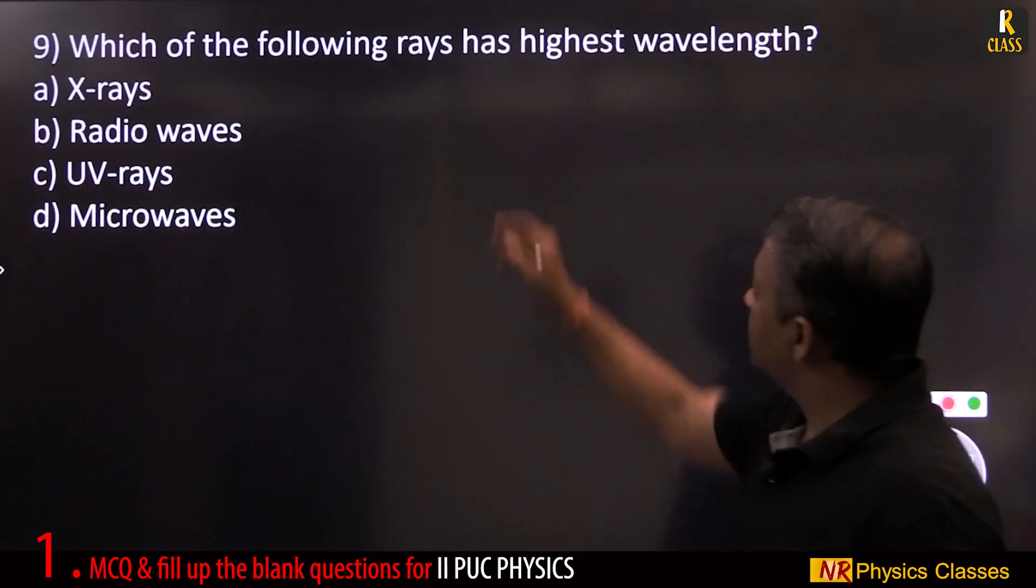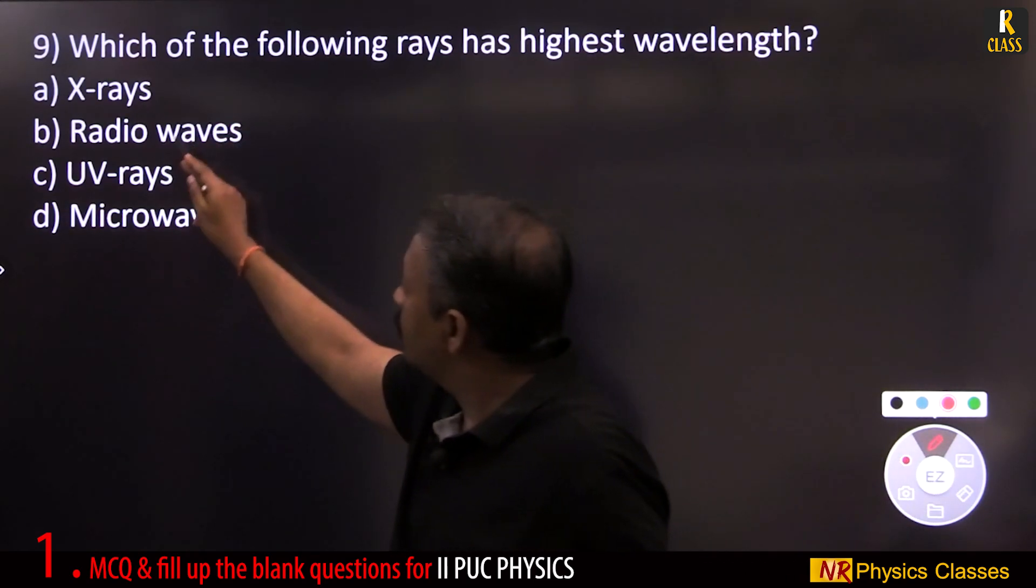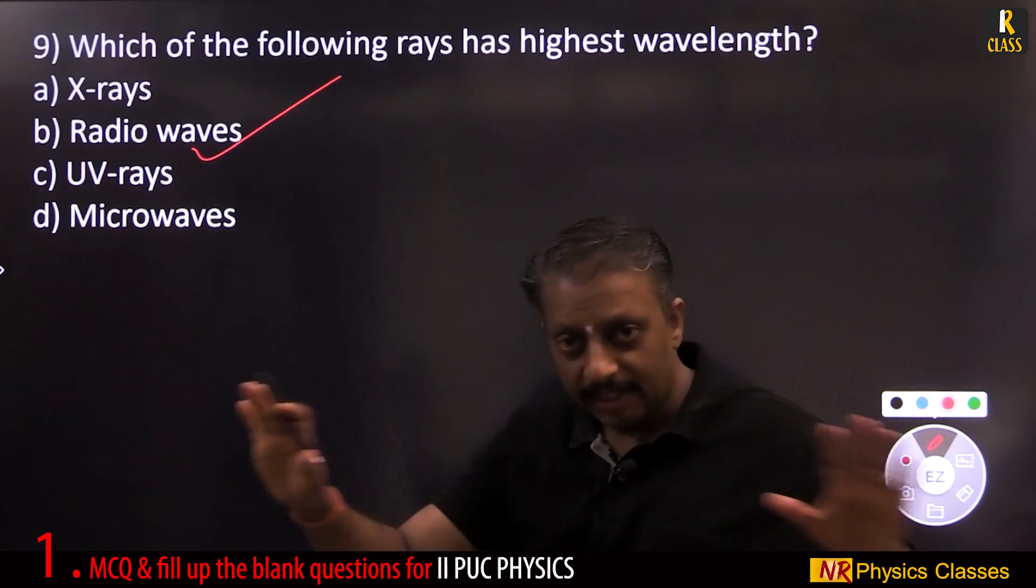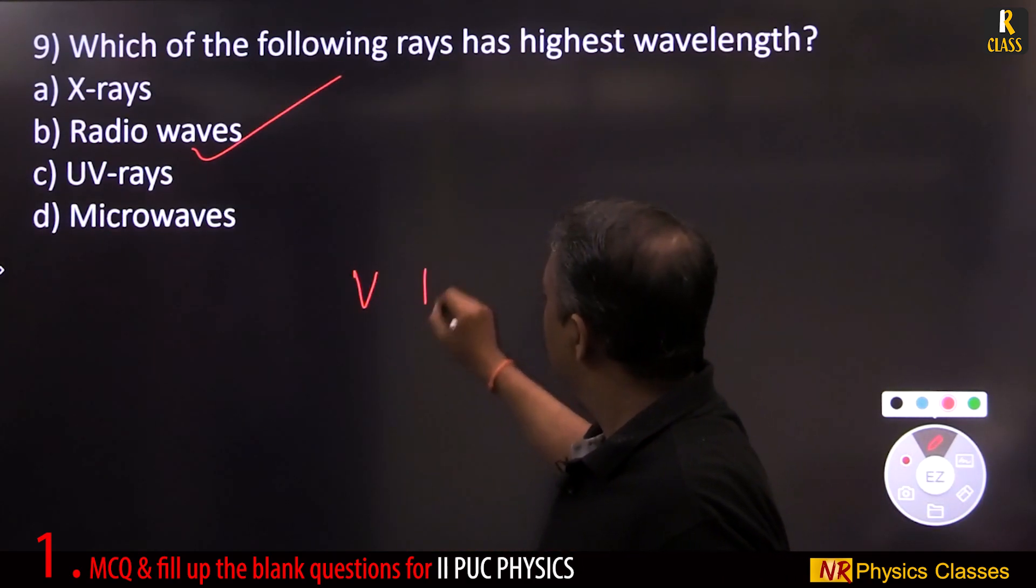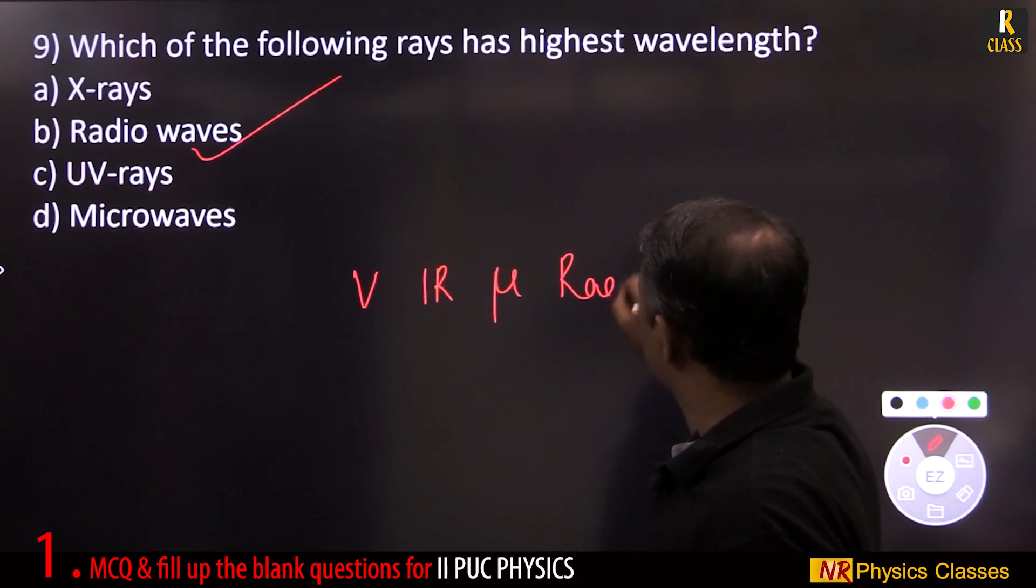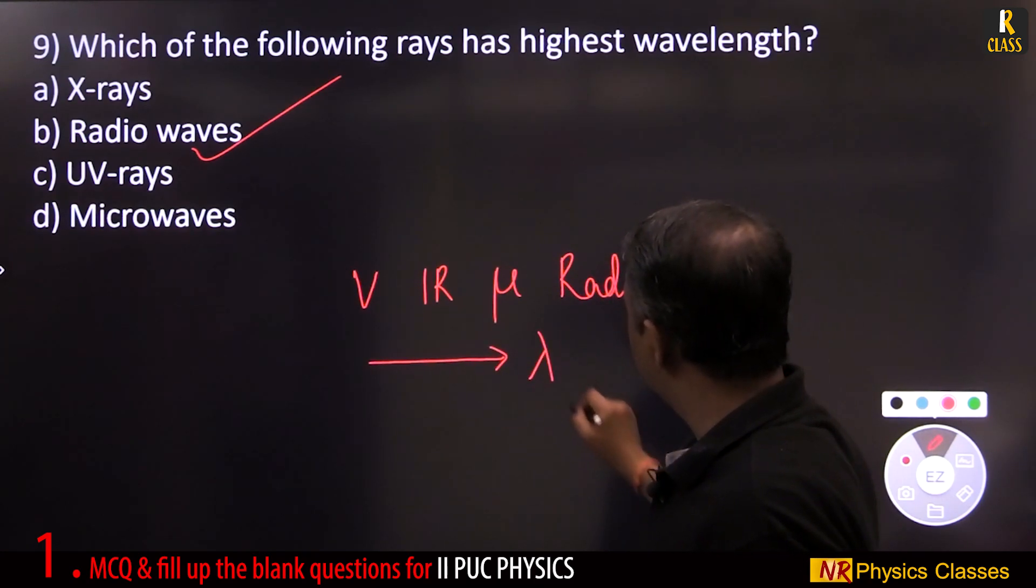Which of the following rays has highest wavelength? X-ray, radio, UV, radio waves. Recall electromagnetic spectrum: visible, IR, microwaves, radio waves. So in this direction, wavelength increases.